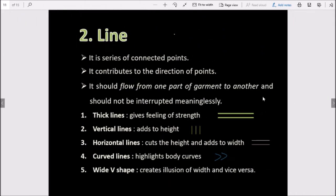The second element is line. Line is a series of connected points. When we have so many points and connect them, this is our line. It contributes to the direction of points. This is our direction - horizontal or vertical. It should flow from one part of the garment to another. If you have fabric or jeans, you can see the lines flowing from one part of the garment to another, and they are not interrupted meaninglessly.